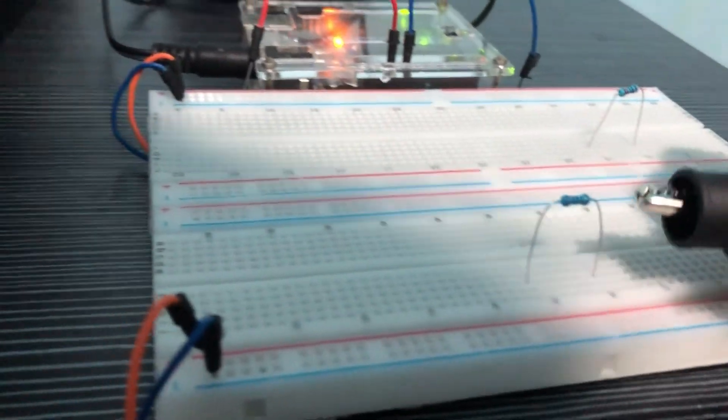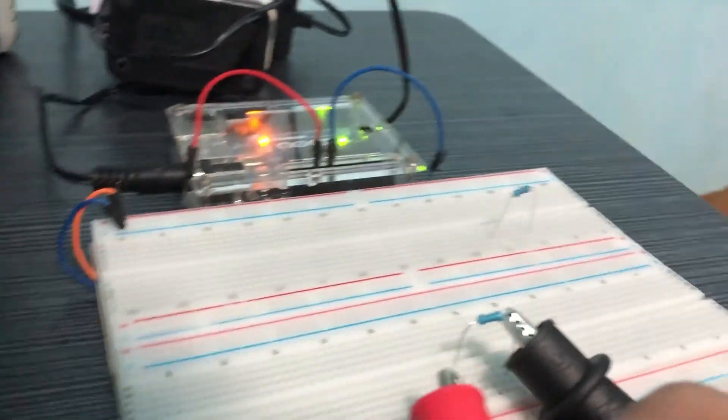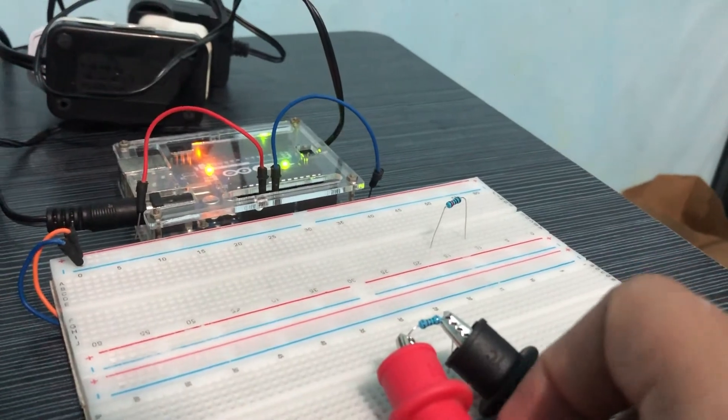For measurement of resistance, you have two options: a 2-wire measurement and a 4-wire measurement. Connect your test lead directly to the end terminals of the resistor.